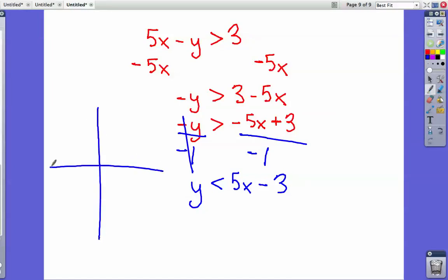If we were to take our graph here, the y-intercept is down 3 (1, 2, 3), because it's negative, so we go down negative 3. And then also, the slope is 5, so we're going to go up 5 (1, 2, 3, 4, 5) and over 1.